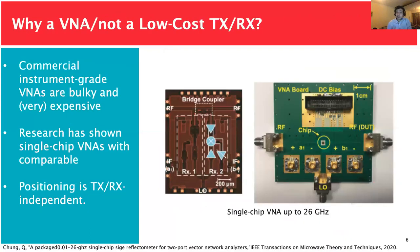The elephant in the room: why are we using a VNA when network analyzers are bulky and quite expensive, when we could use a low-cost transmitter and receiver? Research has shown single-chip VNAs with comparable performance to commercial counterparts. We believe positioning and getting the measurements is not really a TX or RX problem — it's more a problem of positioning and environment. Any device with a dynamic range of more than 40 or 50 dB will most likely work for capturing at least the main lobe of an omnidirectional or directional antenna.